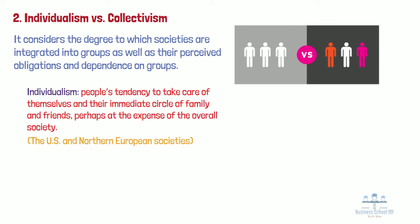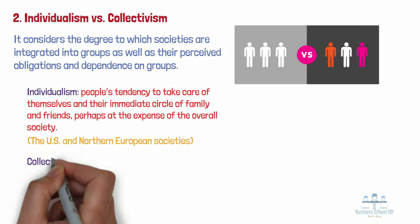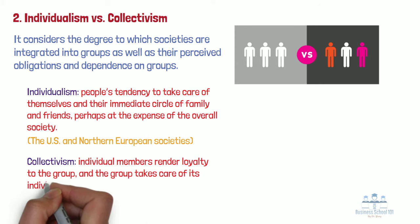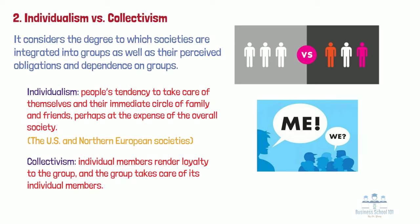On the other hand, group goals take precedence over an individual's goal in collectivist societies. Individual members render loyalty to the group, and the group takes care of the individual members. Rather than prioritizing 'me,' the 'us' identity prevails. The most important part of being in a collectivist society is pursuing the common goals, beliefs, and values of the group as a whole, so much so that in some cases it's nearly impossible for outsiders to join the group. Cultures that prize collectivism include Singapore, Korea, Mexico, and Arab nations.